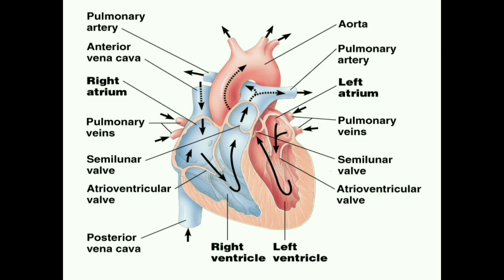The first part is the left atrium — the top chamber on the left side of the heart. The left ventricle is the bottom chamber on the left side of the heart. Next is the right atrium, which is the upper part on the right side. The right ventricle is the bottom chamber on the right side of the heart.